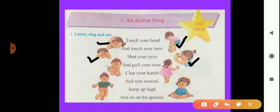Now the fifth line is 'clap your hands.' You all know the clapping, and we can see the action of clapping here — this boy claps his hands. And 'turn around' — what is turning? Turn around. Look at this action — this is the action of turning around.